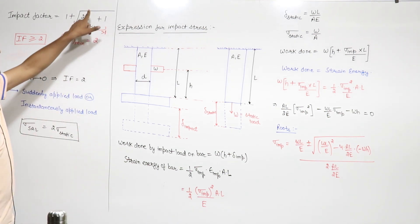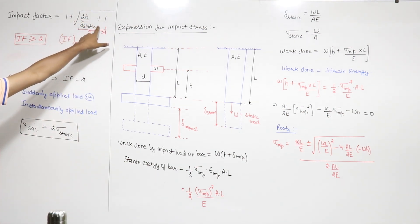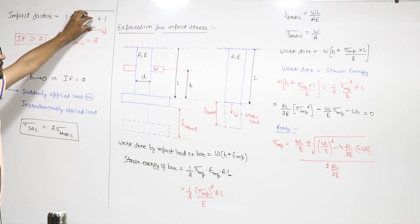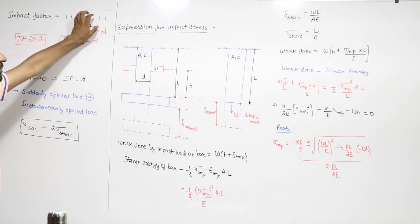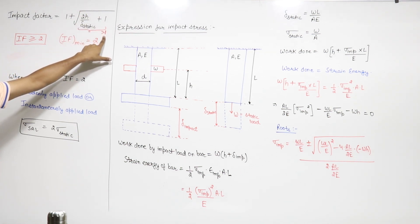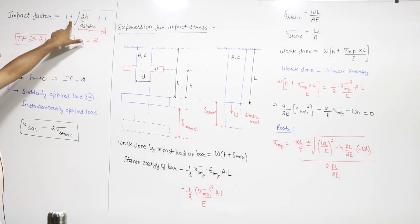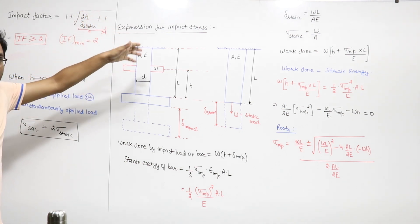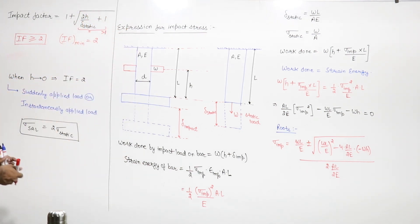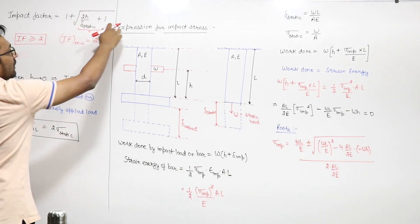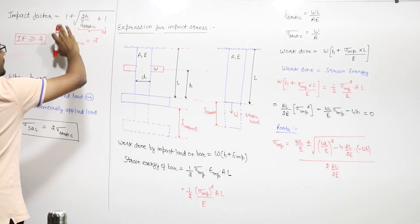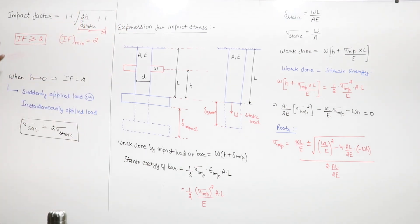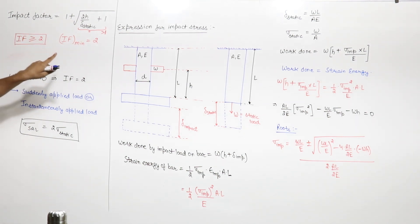Because h is positive and the deflection due to static loading is always positive, this is a positive term. So 1 plus something positive will always be greater than 1. The square root of a term which is greater than 1 is always greater than 1. So this square root term is always greater than 1.